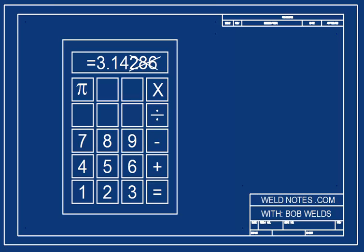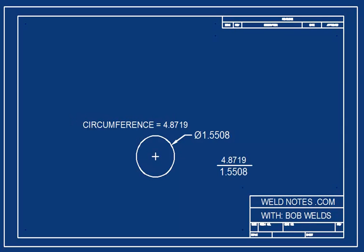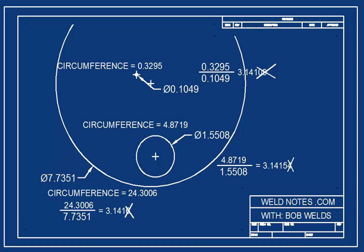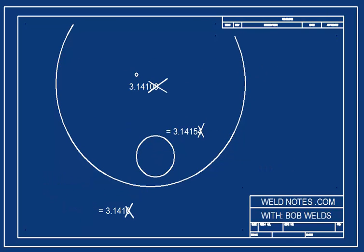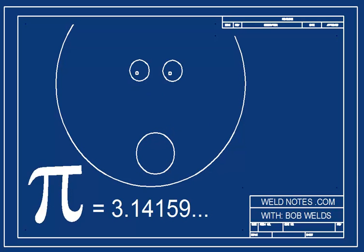So the circumference is a little more than 3 times bigger than the diameter. This is true of any circle. The circumference is a little more than 3.14 times bigger than the diameter. 3.14, does that sound familiar?